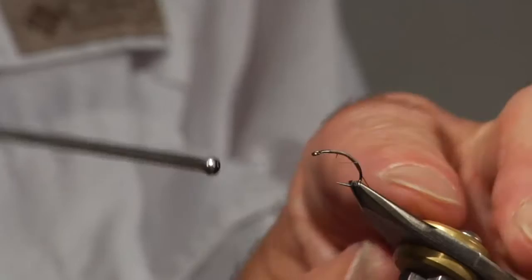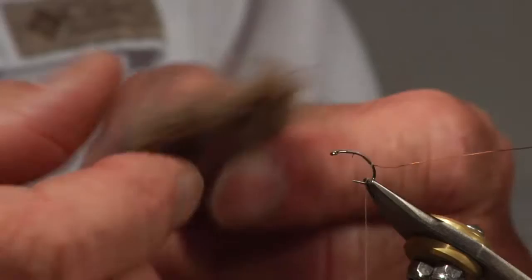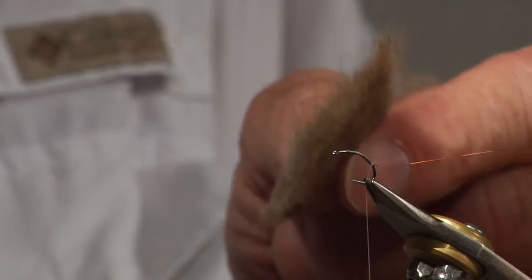I'm going to take the thread just about back to there. Get that loop up out of the way. This is some of the under fur out of this Australian possum hide. It's like a perpetual fly. Once you get this thing going, it'll just about feed itself as far as materials.